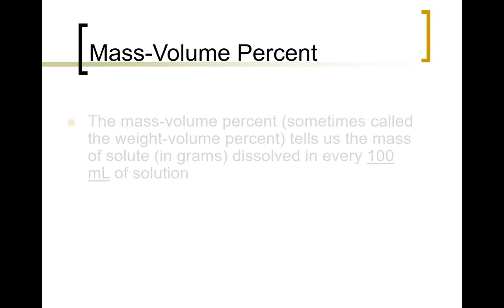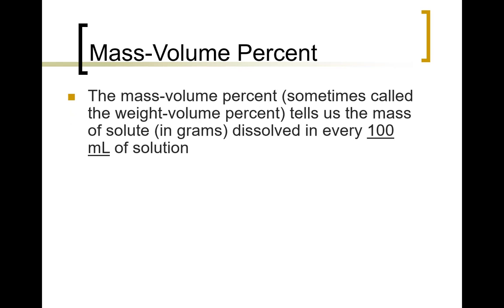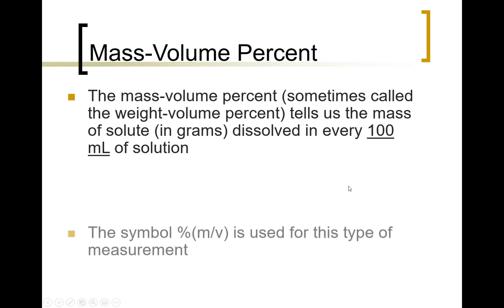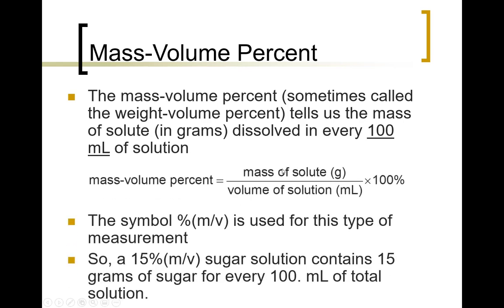Mass volume percent we will deal with fairly often in this class, but we don't see it a lot in chemistry in general. It's sometimes called the weight volume percent and what it is is it's the mass of the solute for every 100 milliliters of solution. So you'll notice the main difference here is it's grams of solute over volumes of solution times 100 percent in milliliters.